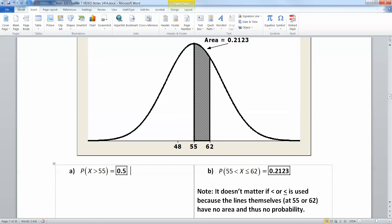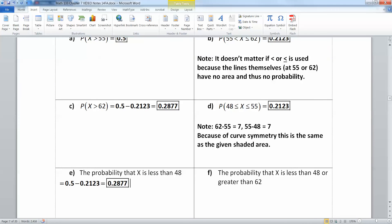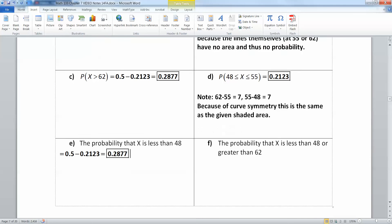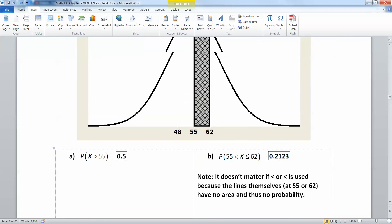Now what about the probability that X is less than 48 or greater than 62? Well that would be that hypothetical left hand tail and the hypothetical right hand tail we can see right here. But we've already found each of those tails, so you just add them up.